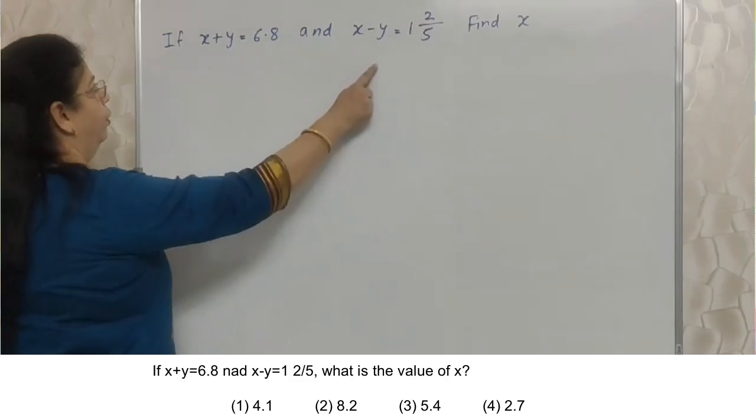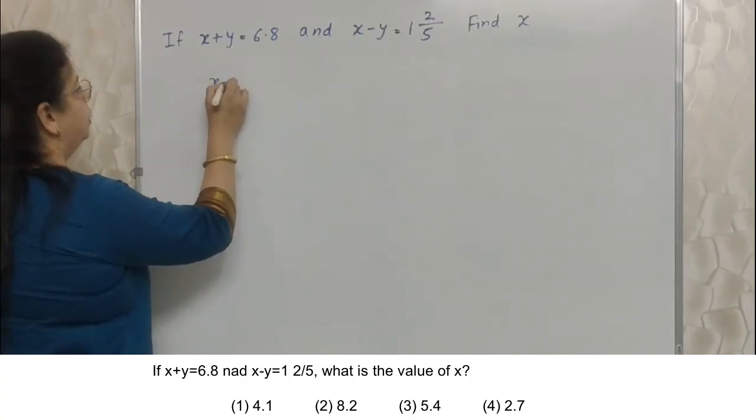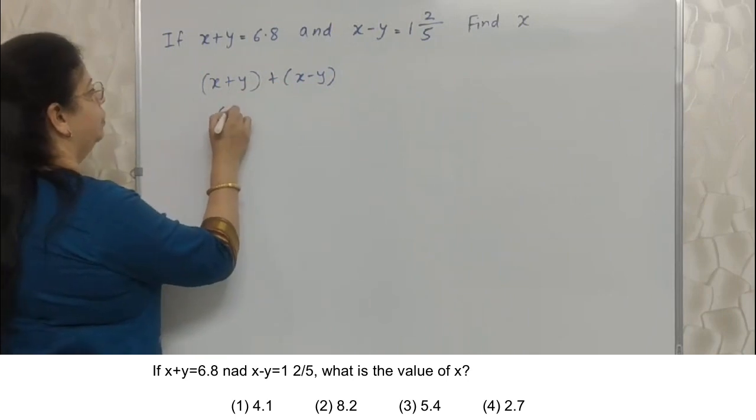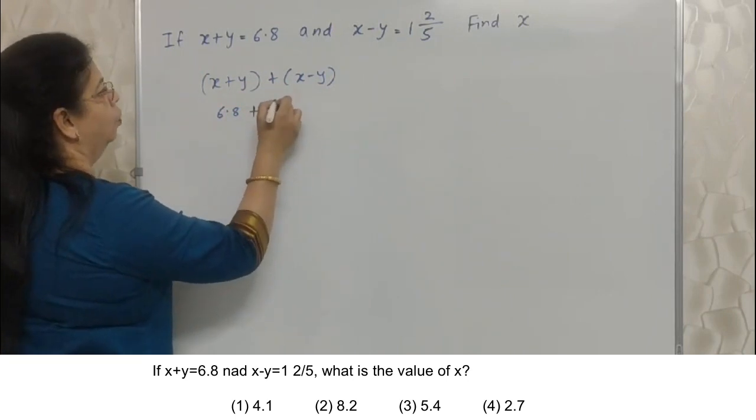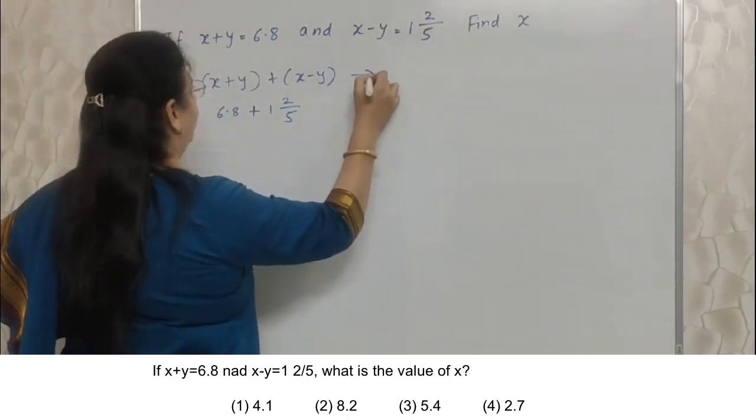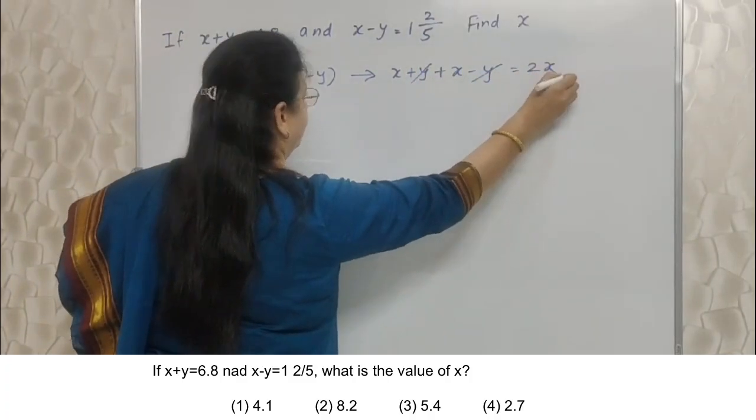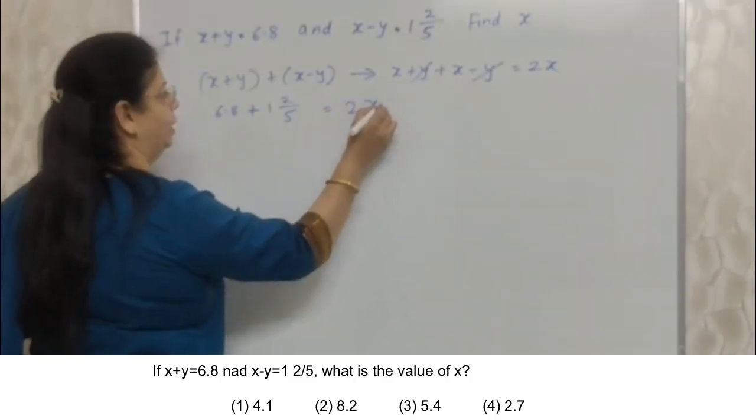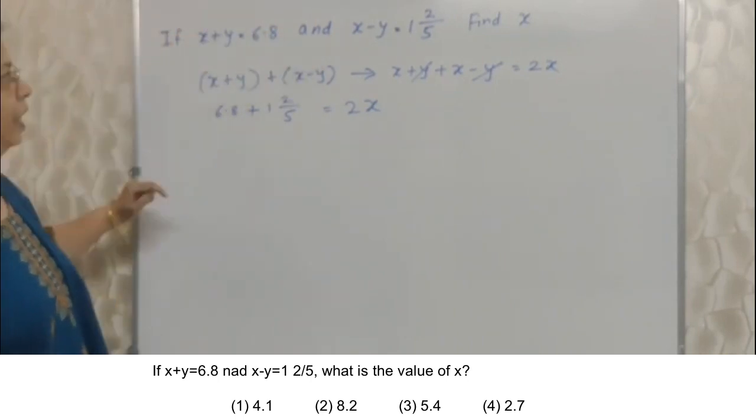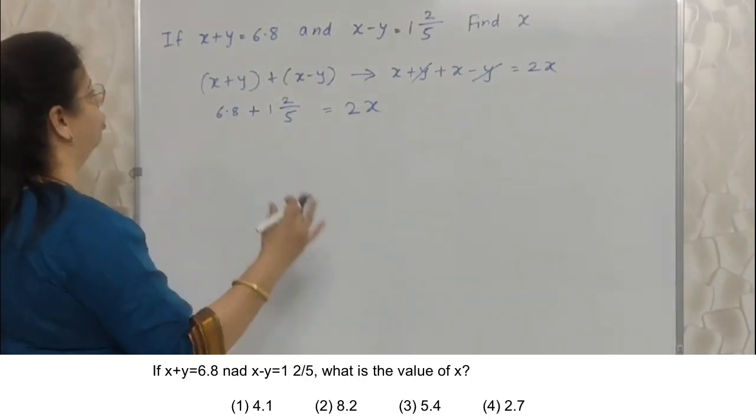Students, next sum I have written on the board. They have given this x plus y, x minus y. They have told us to find the value of x. Very simple. If we do x plus y plus x minus y, what we will get? 6.8 plus 1 and 2 upon 5. Right? Why I am adding this? Because if we simplify this, what are we going to get? x plus y plus x minus y. So y will go. And 2x will remain. Right? So if we add this, this will be equivalent to 2x. Remember this. That's why I have taken this advantage of plus y and minus y. So always we want to get rid of y as far as possible and as soon as possible.